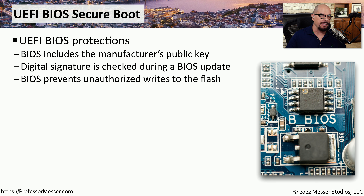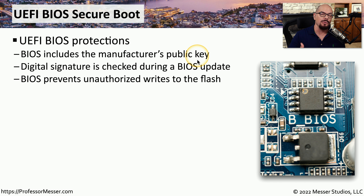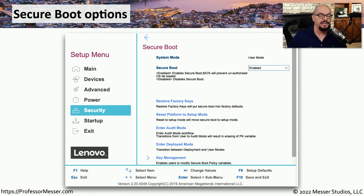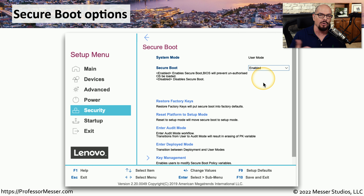To be able to use Secure Boot, your operating system has to have a digital signature associated with it that is checked during the startup process. This means the public key for the manufacturer of that operating system already has to be available in the BIOS itself. The BIOS also has fail-safes built in to prevent anyone from making changes to this important information. Secure Boot verifies the digital signature of the bootloader against the public key embedded within the BIOS, and if that verifies, the system has not been modified and can continue booting. In this Lenovo BIOS, there is a Secure Boot option under the Security tab where you can enable or disable it.